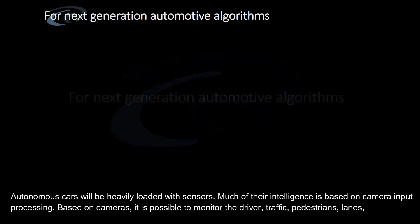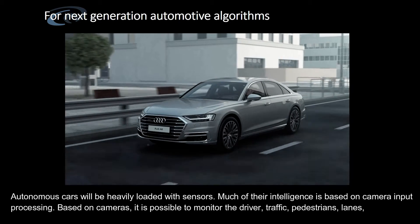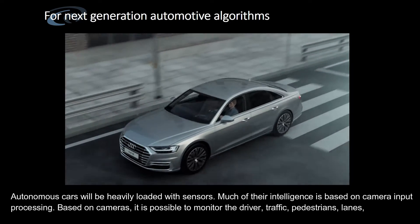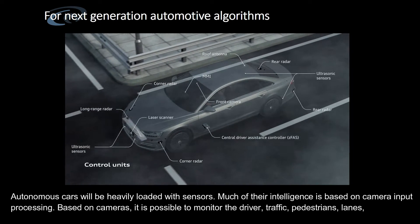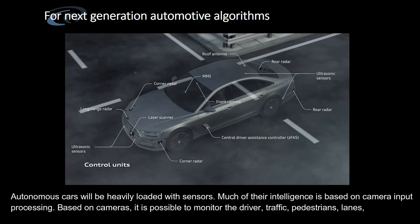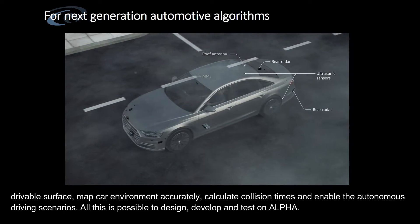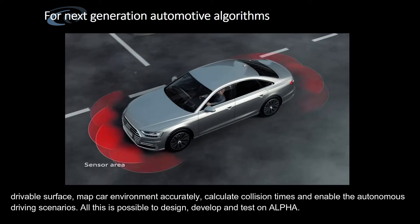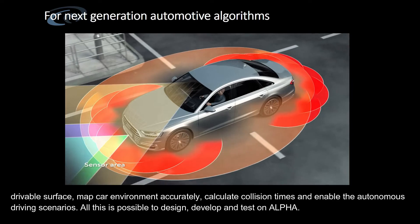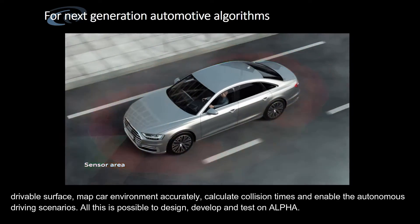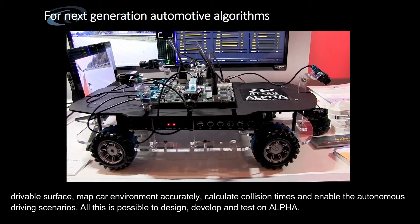Autonomous cars will be heavily loaded with sensors. Much of their intelligence is based on camera input processing. Based on cameras, it is possible to monitor the driver, traffic, pedestrians, lanes, drivable surface, map car environment accurately, calculate collision times and enable autonomous driving scenarios. All this is possible to design, develop and test on Alpha.